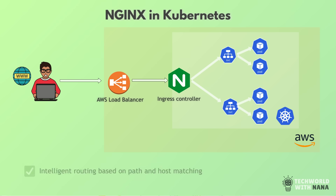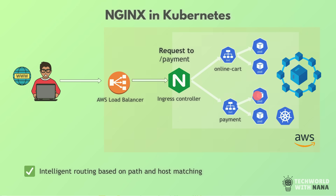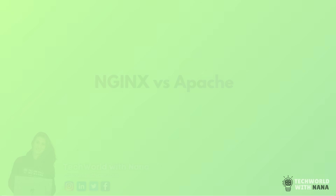Every request comes from the cloud load balancer, which forwards it to the Ingress controller within the cluster, which then routes traffic based on intelligent logic to different applications. With intelligent routing, if you have one large application with microservices, you can configure the Ingress controller so that if the request URL includes 'online cart' it routes to the online cart microservice, if it includes 'payment' it routes to the payment service, and so on.